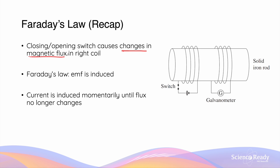Faraday's law can be demonstrated using this simple setup consisting of two coils sharing a common solid iron rod. The left coil is connected to a battery and the right coil is connected to a galvanometer, which measures the flow of current through the right coil.